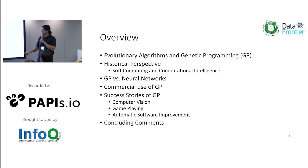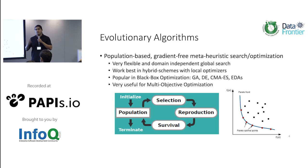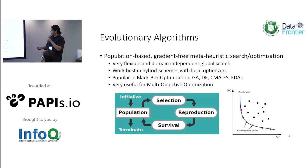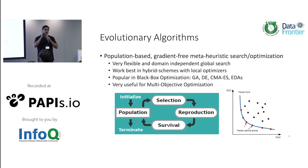Basically, an evolutionary algorithm is a population-based, gradient-free, meta-heuristic for optimization and search. You want to solve optimization or search problems. Evolutionary algorithms are a good tool when gradients are not available. The nice things about these algorithms are they're very domain independent, very flexible, and a very easy way to get close to an initial solution. They're used mostly as black-box optimization algorithms. The most known algorithm is probably genetic algorithms, but the state-of-the-art in black-box optimization can really be found with differential evolution, evolutionary strategies, and EDAs — estimation of distribution algorithms.